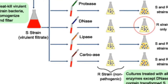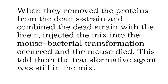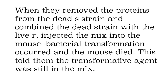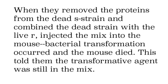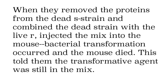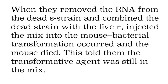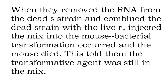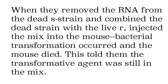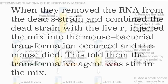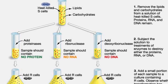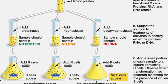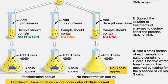Then he started looking at what he thought it might actually be. The biggest candidate was proteins. They took an enzyme called protease — anytime you have '-ase' at the end of a word, that's an enzyme — and used it to remove proteins from the cell. But transformation still happened, so it couldn't be proteins, which was very surprising. Then they looked at RNA, and removing that also didn't stop transformation. They had now taken out carbohydrates, lipids, RNA, and proteins, and transformation still happened every time. So none of those could be the transformative agent.